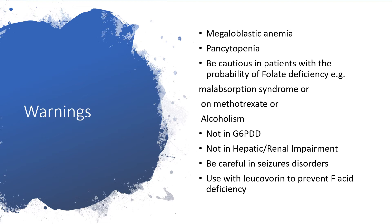In such individuals who have HIV and you want to give pyrimethamine for prophylaxis or treatment of associated infections like toxoplasmosis, be careful. Have the complete blood count and peripheral smear done to know whether you are dealing with megaloblastic anemia, and know the level of folate. In glucose-6-phosphate dehydrogenase (G6PD) deficiency — no pyrimethamine. I have a full presentation on G6PD on my channel. In hepatic or renal impairment, no pyrimethamine. Be careful in seizure disorders. Use with leucovorin to prevent folic acid deficiency.